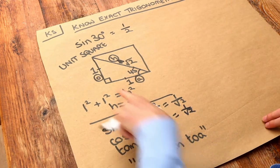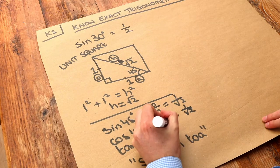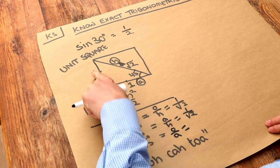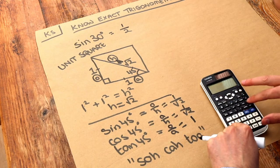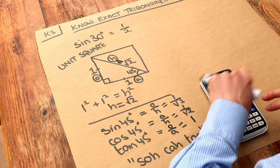And finally, tan of 45 is O over A, which is 1 over 1, which is just 1. So tan of 45 is 1. And if you've got a calculator, we can verify that. Tan of 45 equals 1.